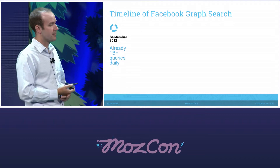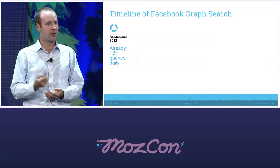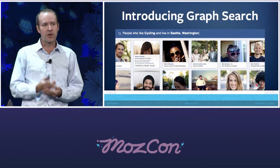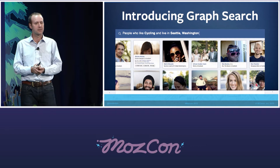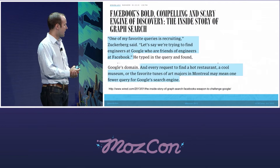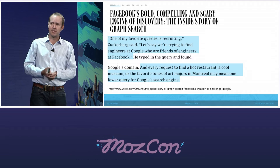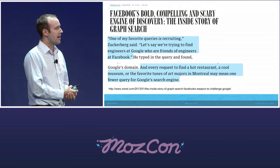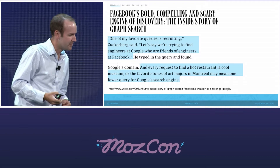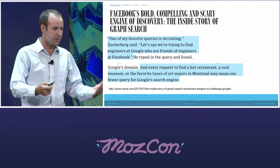Let me walk you through a little bit about where Facebook search has been, where it's come from, and where I think it might be going. Mark Zuckerberg was quoted three years ago as saying they're already getting a billion daily queries — this was even before they actually had a formal search product. Graph Search launched in January of 2013, and it was and still is most useful and primarily focused on returning people results. From their initial press release: 'people who like cycling and live in Seattle, Washington' — these kinds of queries are really what Graph Search was designed for. And Zuckerberg had his eye on Google Search more broadly: top restaurants, museums, or the favorite tunes of art majors in Montreal.